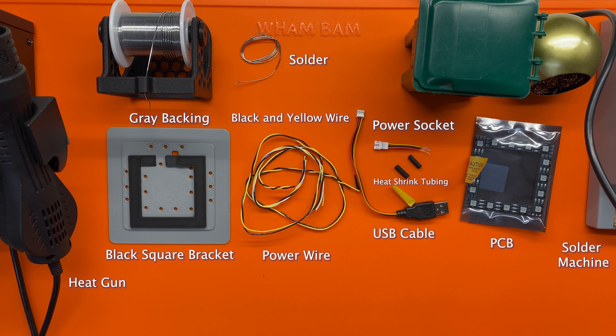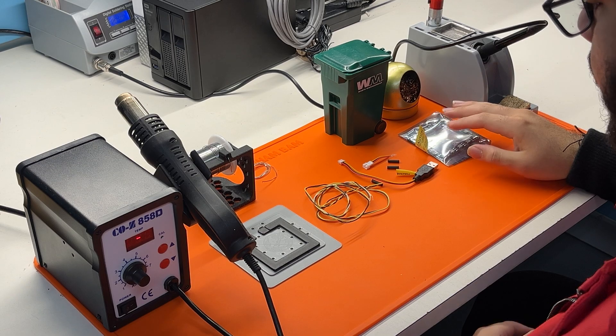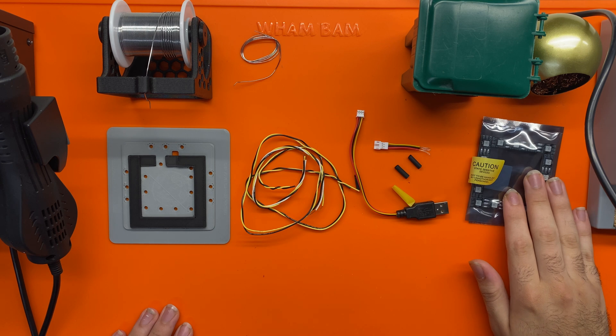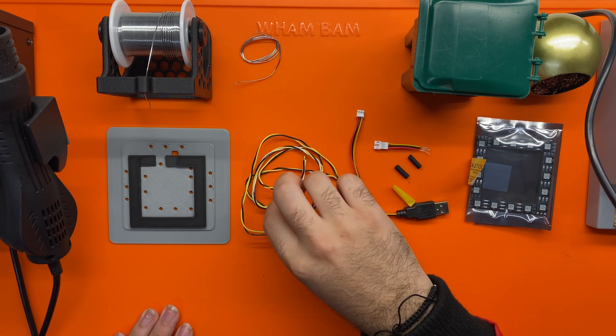First thing I'm going to do is I'm going to move all this to the side and just stay with my PCB and the black and yellow wire.